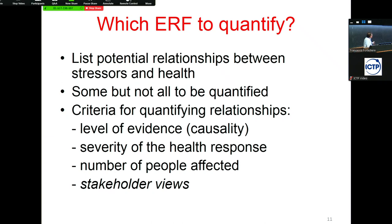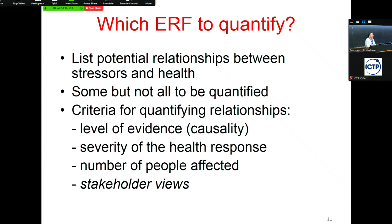We are also addressing the severity of the health response. To the scientist, mortality is more severe, but for the community group, children are much more important than elderly people. So severity here goes with the stakeholder view. Additionally, the number of people affected is also an important issue — if your impact area is basically an elderly population with few children, the health assessment for cognitive function will not be very powerful.